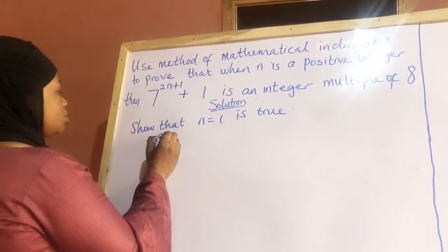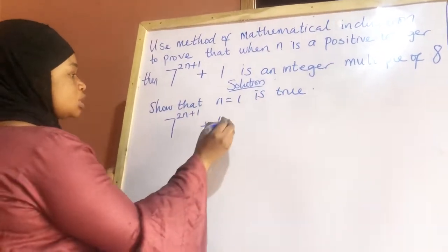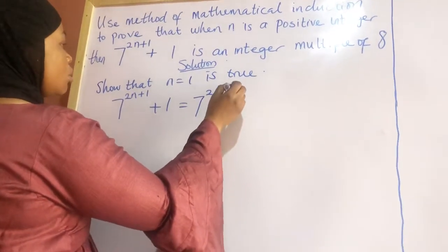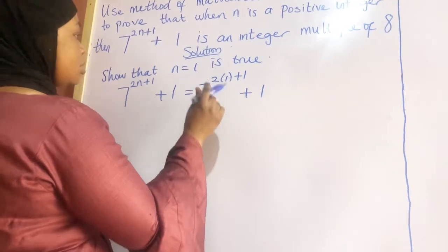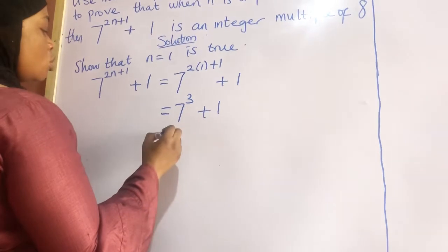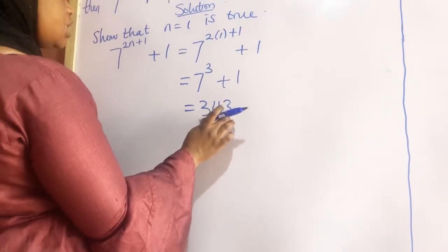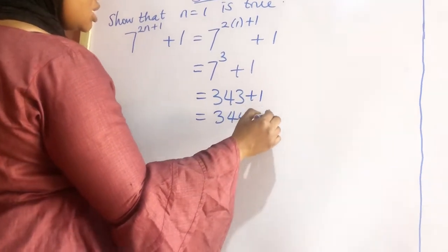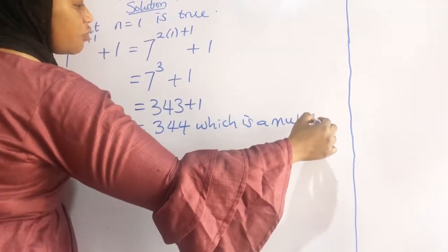So first, show that n equals 1 is true. We put n equals 1 into the expression: 7 raised to the power of 2 times 1 plus 1, plus 1. This equals 7 raised to the power of 3, plus 1, which is 343 plus 1, equal to 344, which is a multiple of 8.